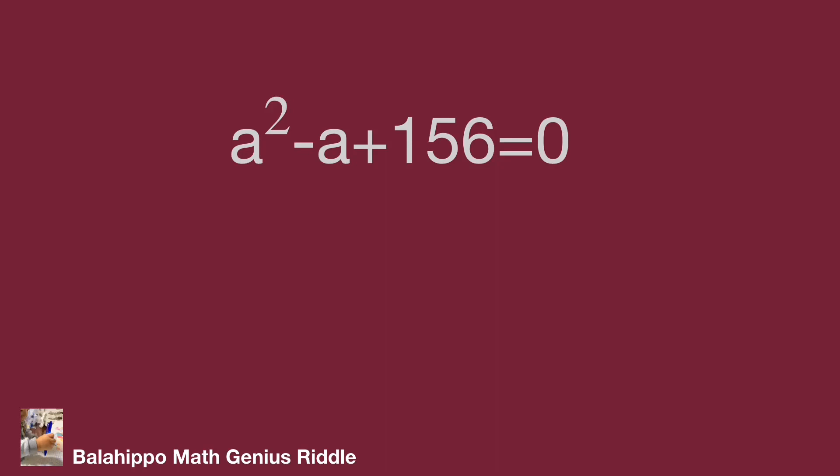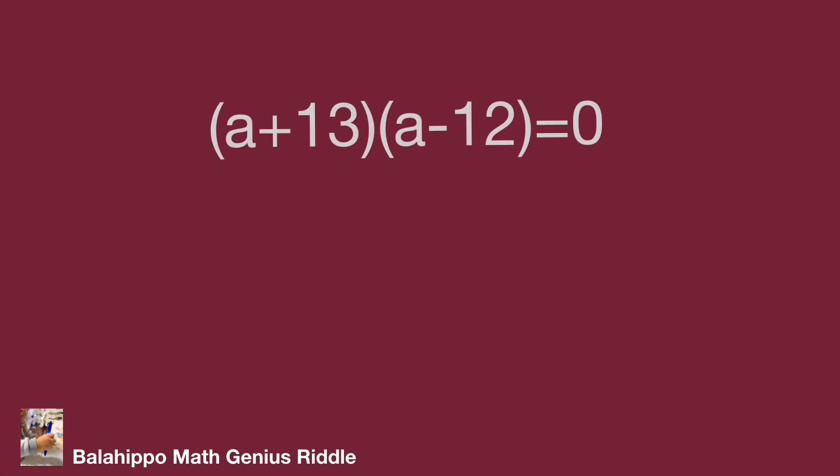Factorize as quantity a plus 13 multiplied by quantity a minus 12 equal to 0. a equal to minus 13 or a equal to 12. And b equal to minus 1 minus a gives b equal to 12 or minus 13.